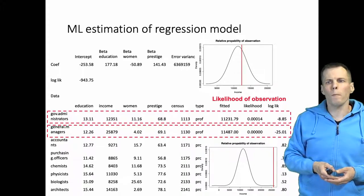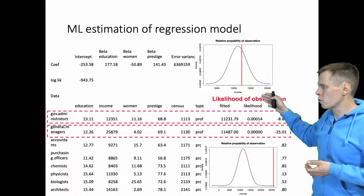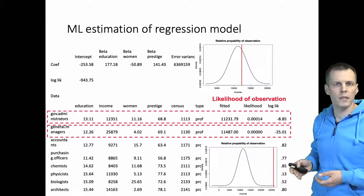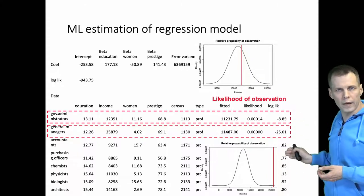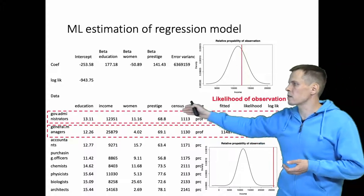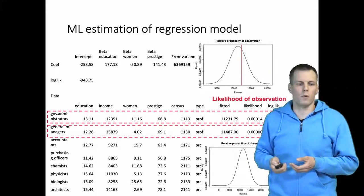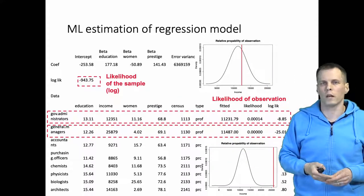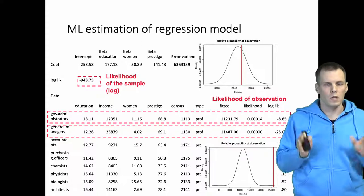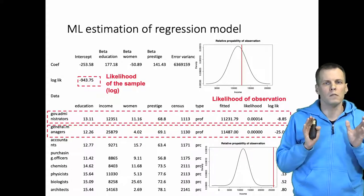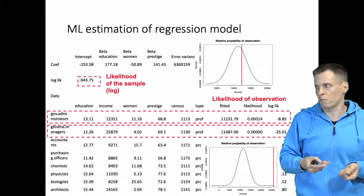Then we multiply these likelihoods together, or in practice we take the sum of these log likelihoods, and that gives us the full likelihood of the model here. So that's the log likelihood that our computer reports. This is maximum likelihood estimation of normal regression model.